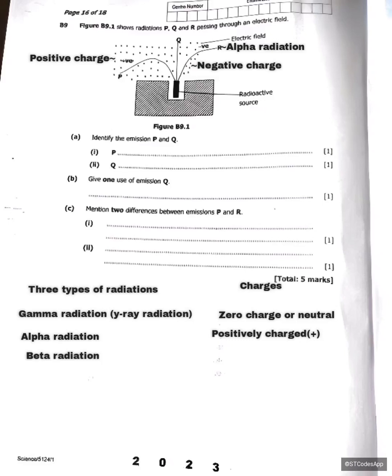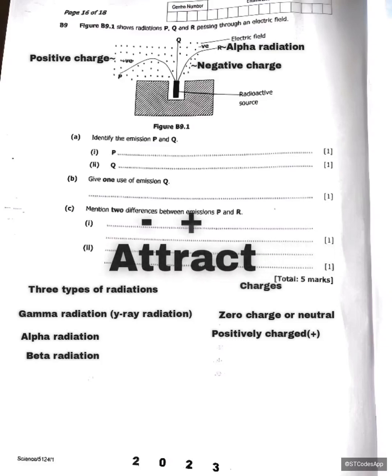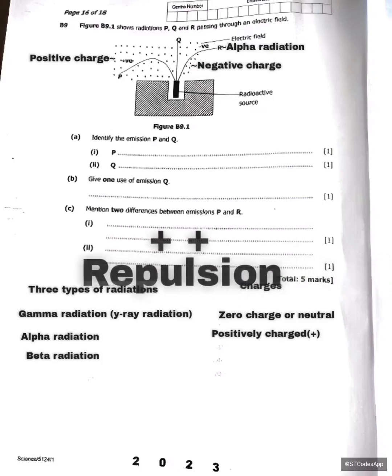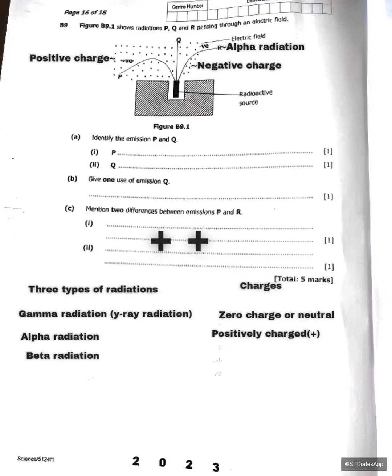Unlike terminals attract, so if R is positively charged it will be attracted to the negative charges. Now, if we said P were the alpha particle, there would be repulsion because like terminals repel — the positive charge of the alpha particle would repel the positive charge on the right side. Therefore, R is the alpha particle, bending toward the negative charges.